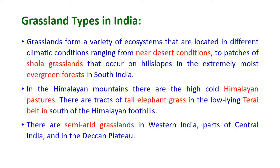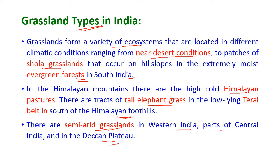Types of grasslands in India: grasslands form a variety of ecosystems located in different climatic conditions, ranging from near-desert conditions to patches of shola grasslands on hill slopes in extremely moist evergreen forests in South India. In the Himalayan mountains there are high cold Himalayan pastures, tracks of tall elephant grass in the low-lying Taray belt south of the Himalayan foothills, and semi-arid grasslands in western India, parts of central India, and the Deccan Plateau.